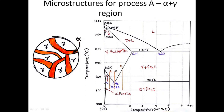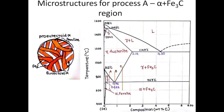We are still in the alpha plus gamma zone, so we have gamma austenite grains together with fully grown alpha particles. If we then cross the eutectoid line, after this line we have alpha plus Fe3C — the gamma austenite converts into alpha plus Fe3C. Entering this region, we have a layered structure of alpha and Fe3C together with the fully grown alpha. This fully grown alpha is called pro-eutectoid alpha, because it came into existence before the eutectoid line. The alpha in the layered form is called eutectoid alpha.